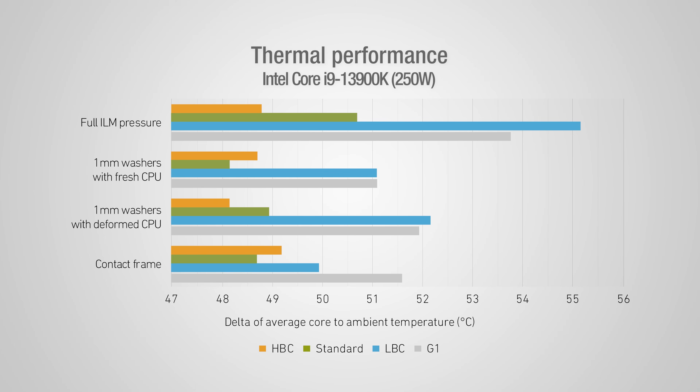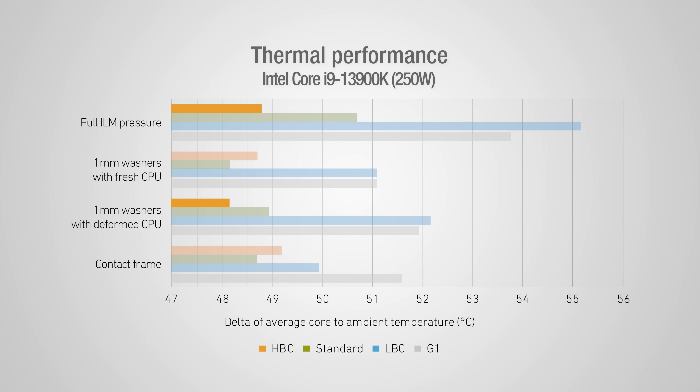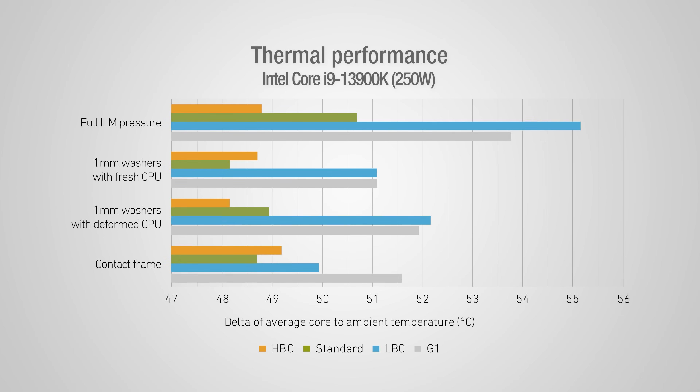However, it's when these CPUs are used with full ILM pressure, or have already become permanently deformed, that the HBC version steps in. By choosing the specialized HBC version, customers can typically gain 1 to 2 degrees C extra compared to the medium base convexity standard model on LGA1700 processors used with full ILM pressure. Whether or not a particular CPU has become permanently deformed is difficult to tell, since this will depend on various factors such as time of use, tolerances in ILM pressure, variances in CPU and socket height, as well as heatsink mounting pressure. But as a general rule, we tend to expect slightly better results with the HBC version on CPUs that have been extensively used for 3 months or more.